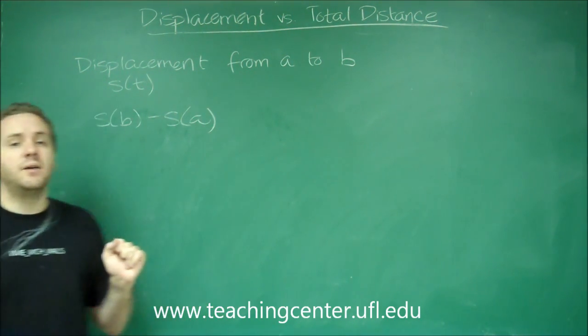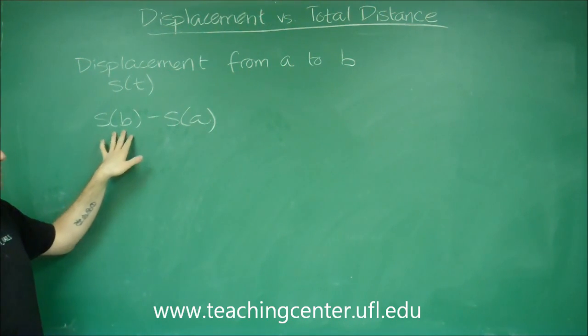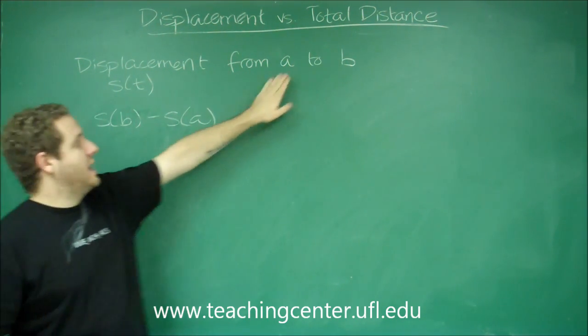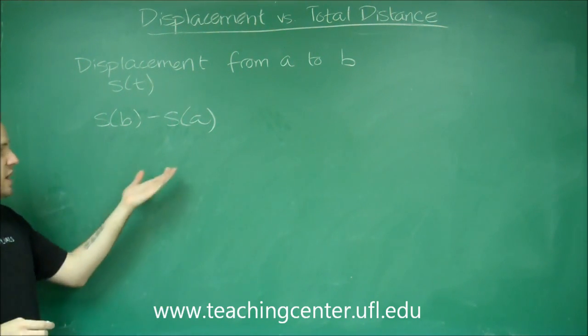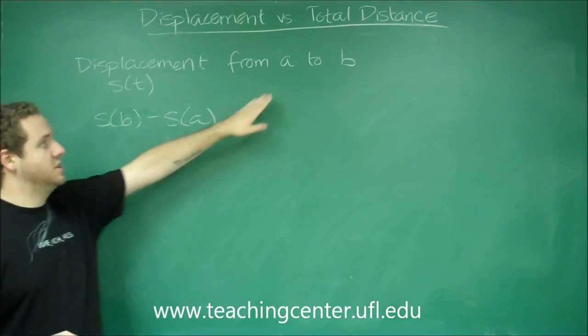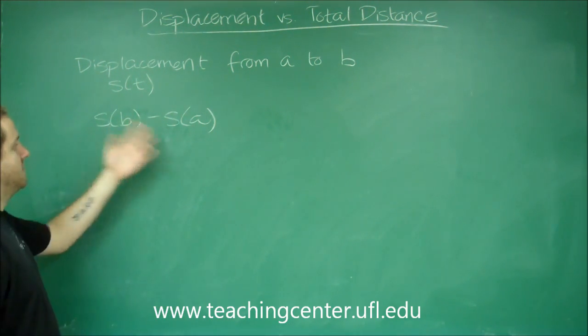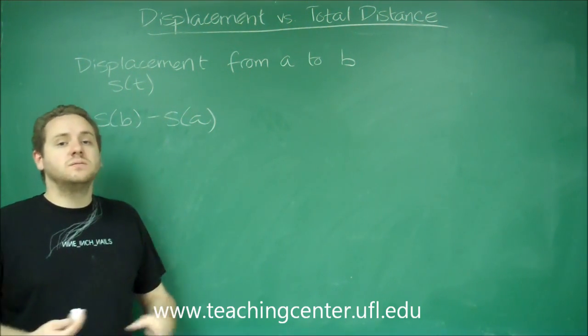Whatever position function you have, evaluate it at the second time and subtract the position function at the first time. So from zero to eight seconds you do s of eight minus s of zero. And that's all you have to do for displacement.